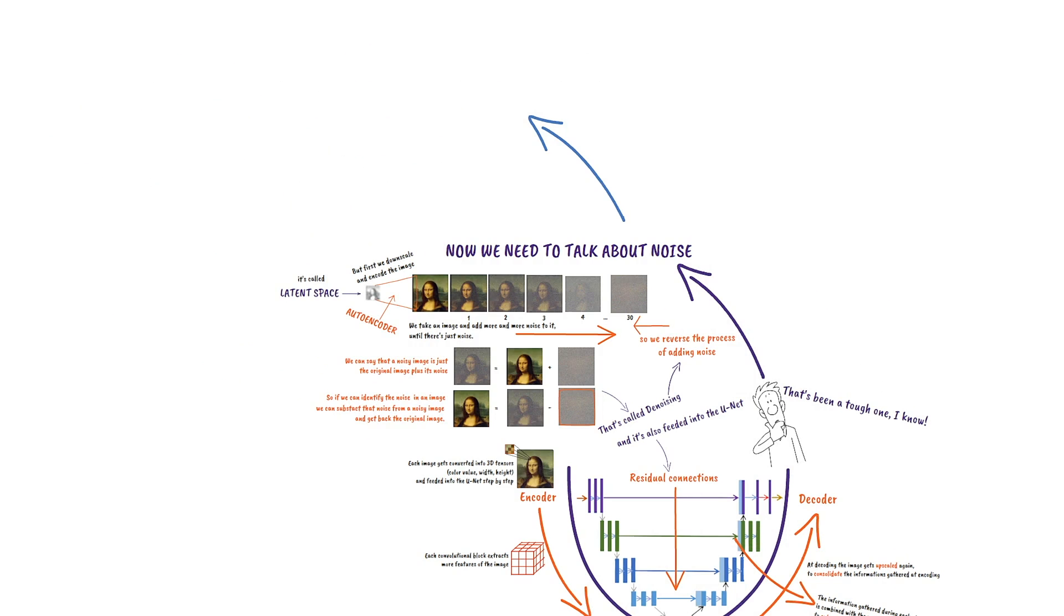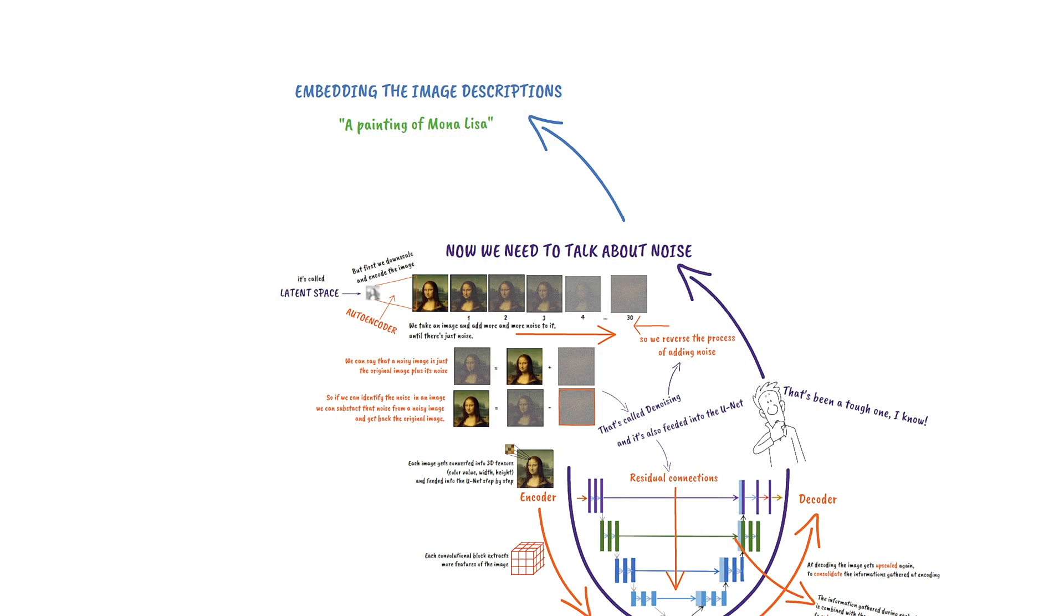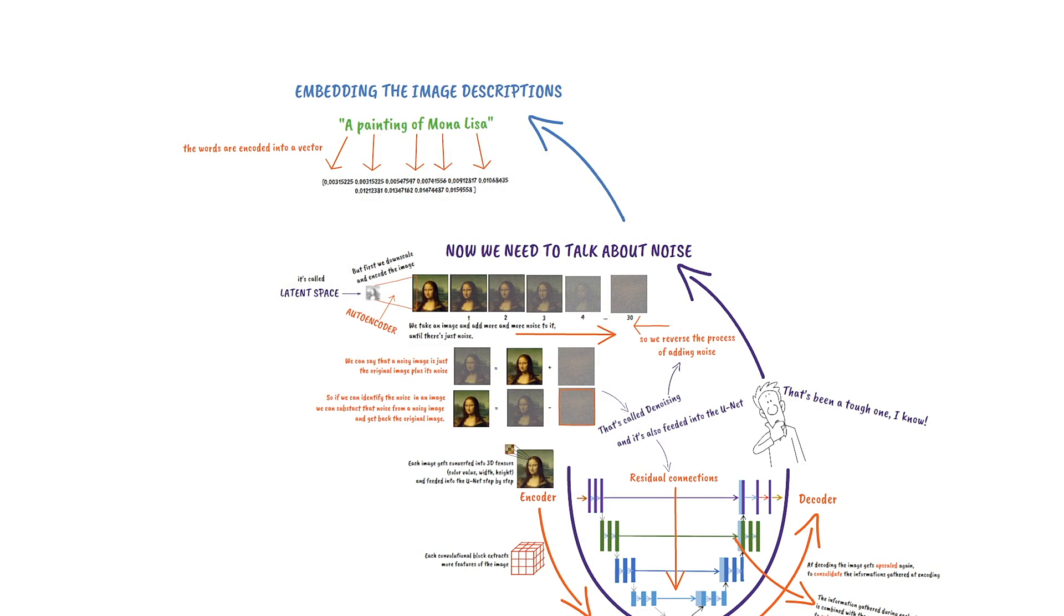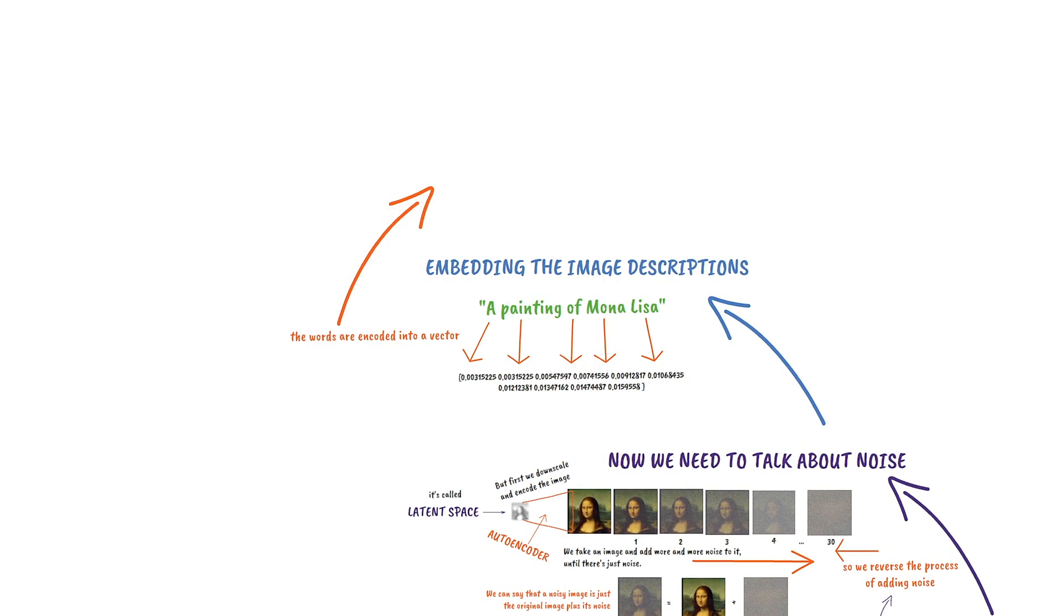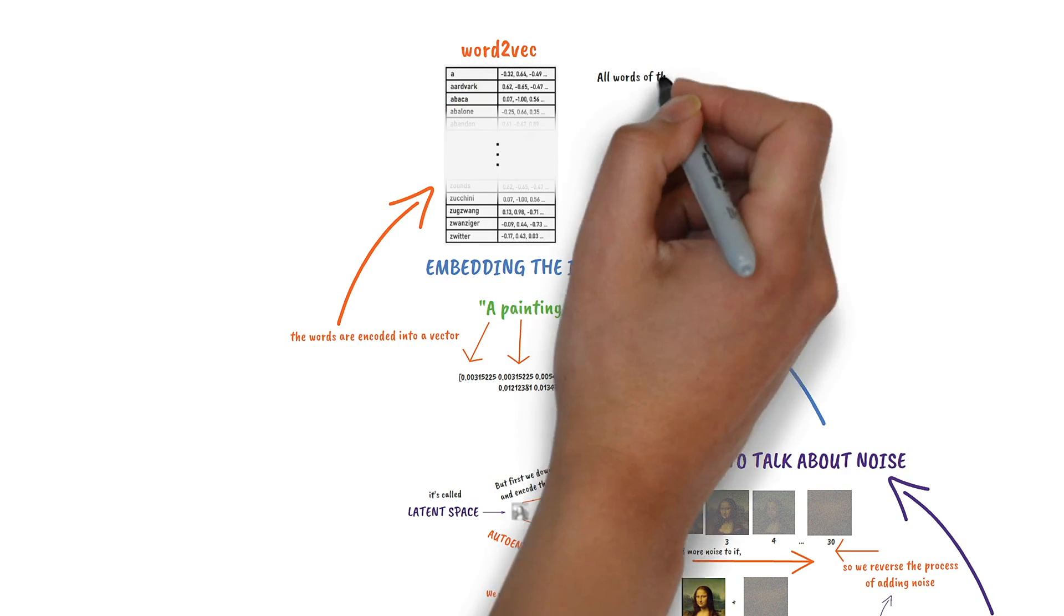Now how can we embed the image descriptions? Let's take the painting of Mona Lisa. The words are converted into a vector, a bunch of numbers. And for that we're using a common list, called word2vec, where all English words are already listed.